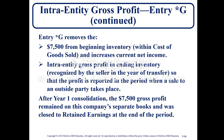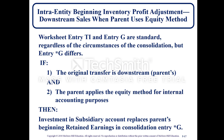After year one consolidation, the $7,500 gross profit remains on the company's separate books and was closed to retained earnings at the end of the period. For the beginning inventory profit adjustment in downstream sales when the parent uses the equity method, worksheet entries TI and G are standard regardless of the circumstances of the consolidation, but entry *G differs if the original transfer is downstream or if the parent applies the equity method for internal accounting purposes. In that case, the investment in the subsidiary account replaces the parent's beginning retained earnings in the consolidation entry for *G.